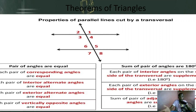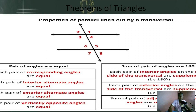The other type is alternate interior angles — also called internal alternate angles. They are always equal. Three and five are alternate interior angles. Four and six are alternate interior angles.